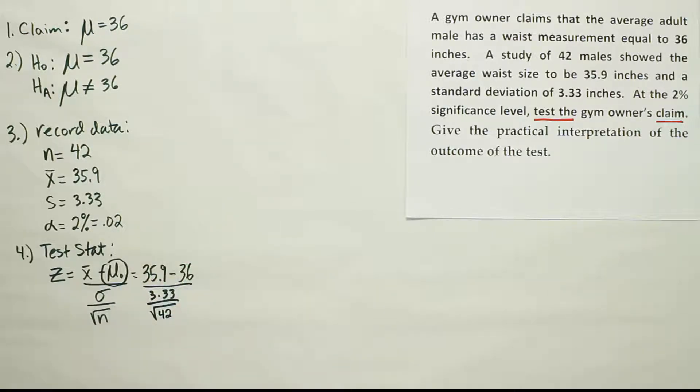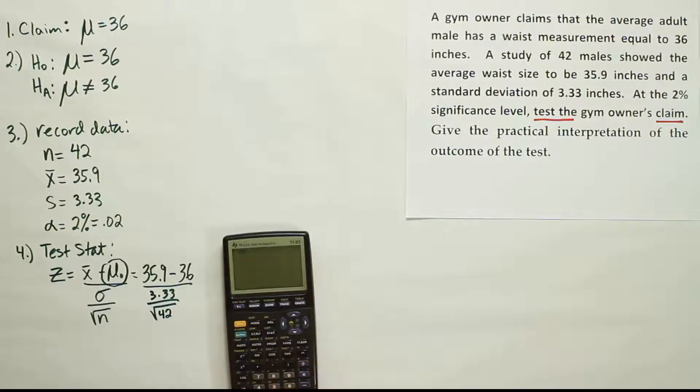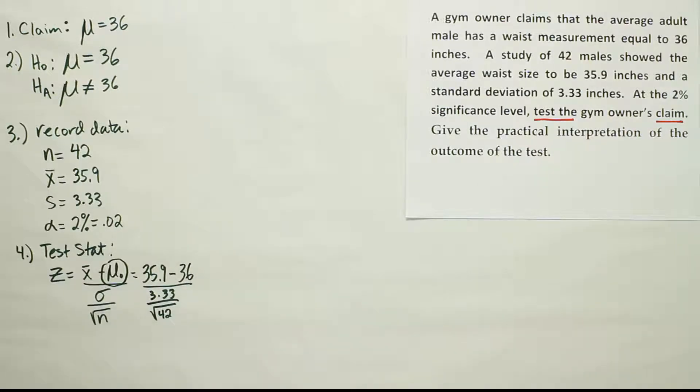Okay, so there is our expression. Now, work that out on our calculator. We're going to have 35.9 minus 36. Of course, that's a difference of minus 0.1. I'm putting it all on the calculator, though, at once, just to allow you to see how that's done. 3.33 divided by the square root of 42. Close it all up. Hit enter. And we get minus 0.19. Minus 0.19.